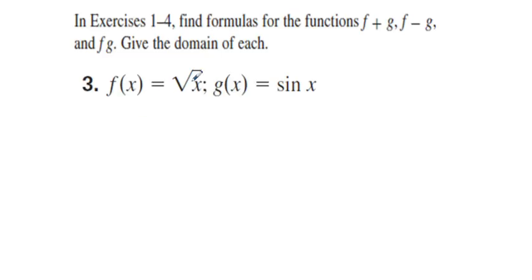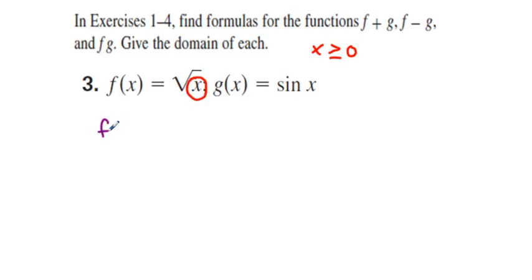We have f of x equals square root of x and g of x equals sine x. Thinking ahead, are we going to have any restrictions in our domain? Yes, because we can't take the square root of a negative number, so x has to be greater than or equal to 0. So f plus g is equal to square root of x plus sine x. There are no domain restrictions on the sine portion, and we can't simplify since these are not like terms, so this is our answer for f plus g.